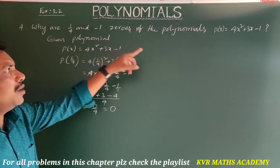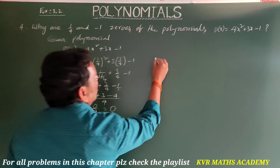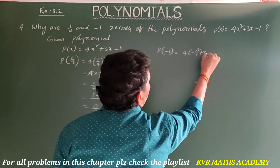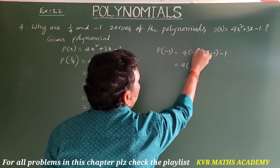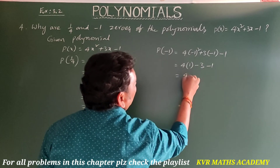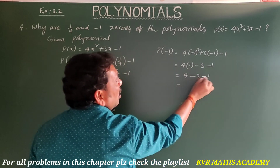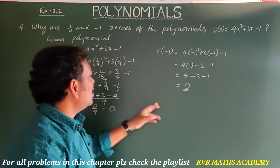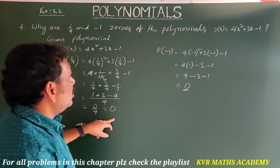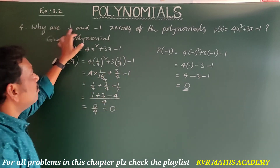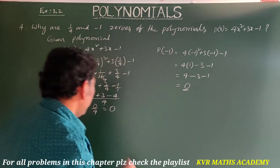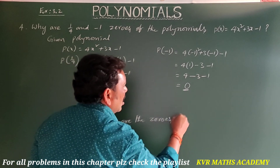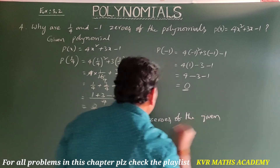Now substituting x = -1: p(-1) = 4 × (-1)² + 3 × (-1) - 1 = 4 × 1 - 3 - 1 = 4 - 3 - 1 = 0. So p(-1) = 0 as well. Since both p(1/4) = 0 and p(-1) = 0, therefore 1/4 and -1 are the zeros of the given polynomial 4x² + 3x - 1.